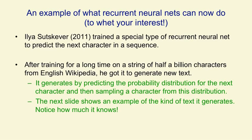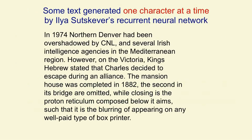The next slide shows an example of the text that it generates. It's interesting to notice how much is learned just by reading Wikipedia and trying to predict the next character. Remember this text was generated one character at a time. Notice that it makes reasonably sensible sentences composed almost entirely of real English words. Within a sentence it has some thematic sense — the phrase 'several Irish intelligence agencies in the Mediterranean region' has problems, but it's almost good English. Notice also what it says at the end: 'such that it is the blurring of appearing on any well-paid type of box printer.' There's a certain thematic thread about appearance and printing, and the syntax is pretty good — all generated one character at a time.